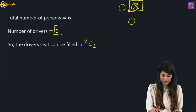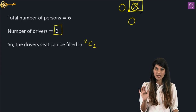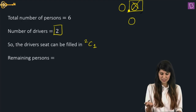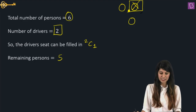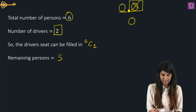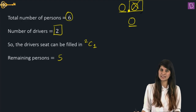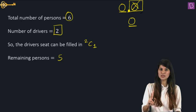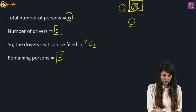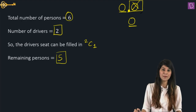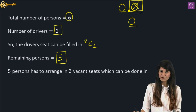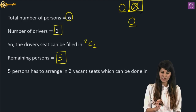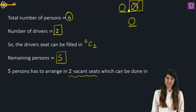Now this driving seat is filled, so one person is gone and five persons are remaining. How many seats do we have left? One front seat and one back seat. So two persons will be selected from five and arranged as well. We have to arrange five persons in two vacant seats, which can be done in 5P2 ways.